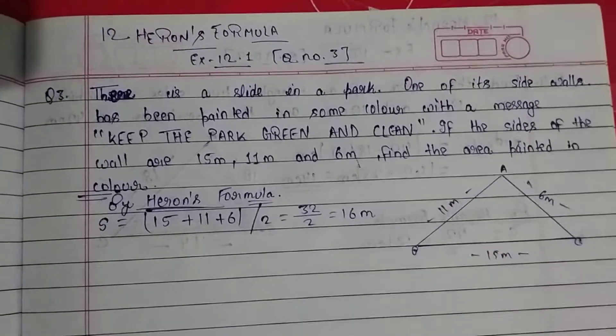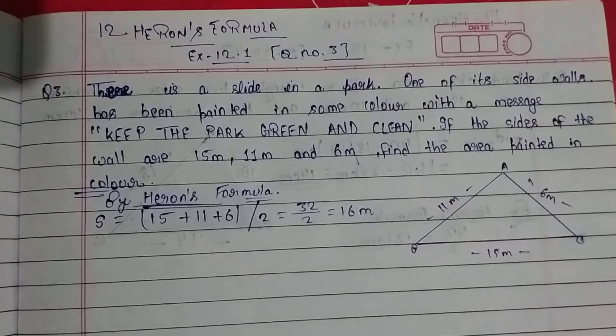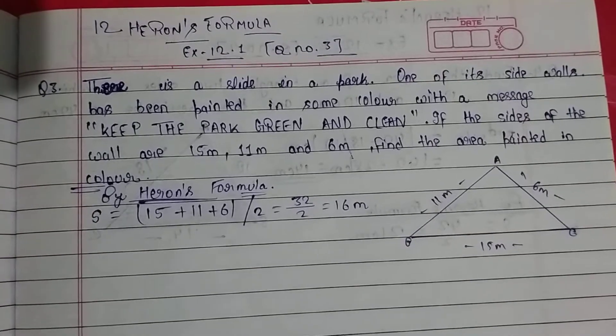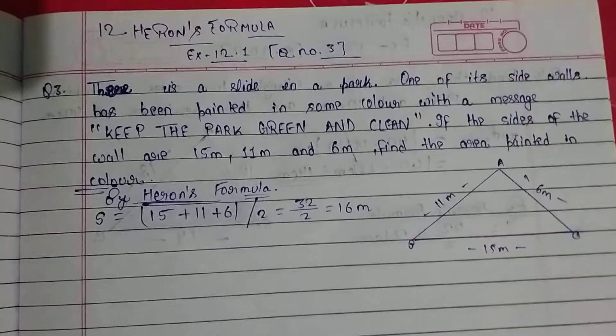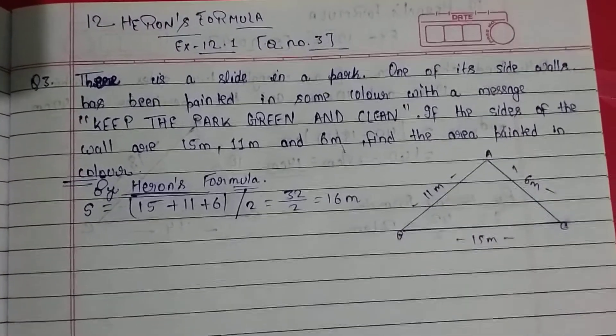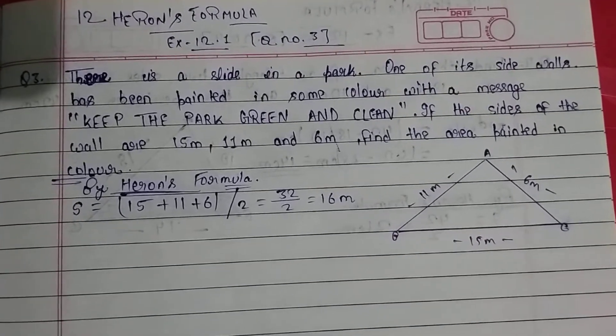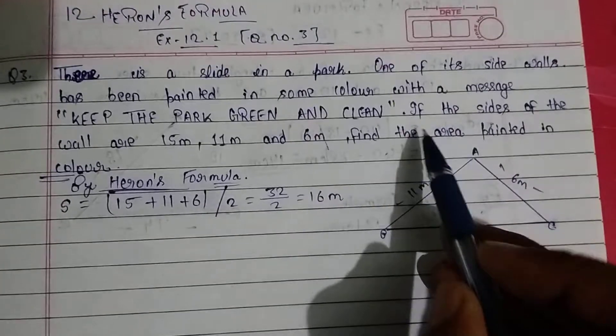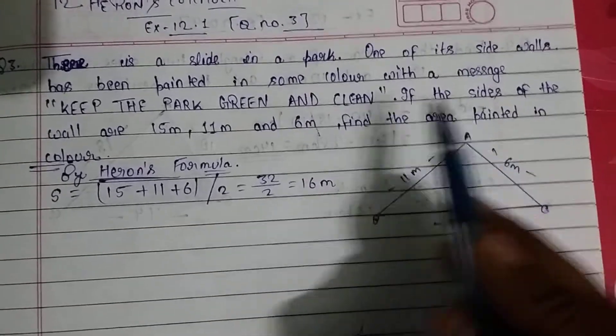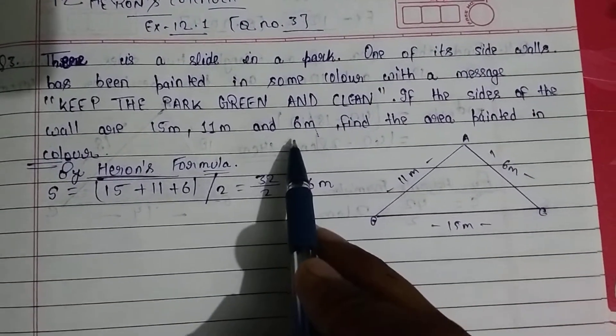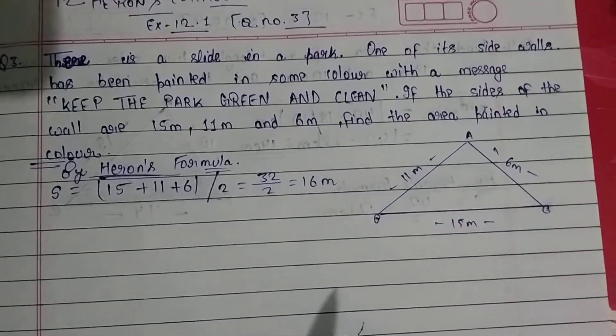This is Class 9, Chapter 12, Exercise 2.1, Question 3. There is a slide in a park. One of its side walls has been painted in some color with a message 'Keep the Park Green and Clean'. The question is: if the sides of the wall are 15 meter, 11 meter, and 6 meter, find the area painted in the wall.